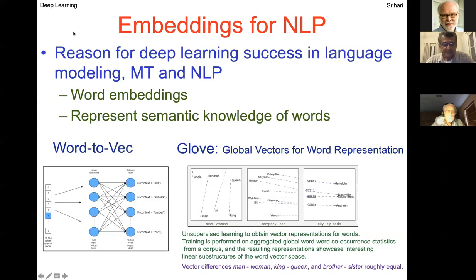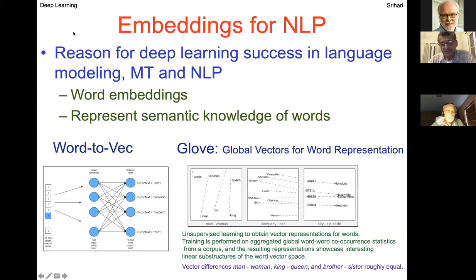This slide is a reminder to my class and to this group that embeddings are the main success story for natural language processing. The reason deep learning has had so much success in natural language modeling, machine translation, and NLP has been word embeddings, where we come up with representations of words using the semantics of the context in which they occur. This generalizes into knowledge, so I introduce it first.